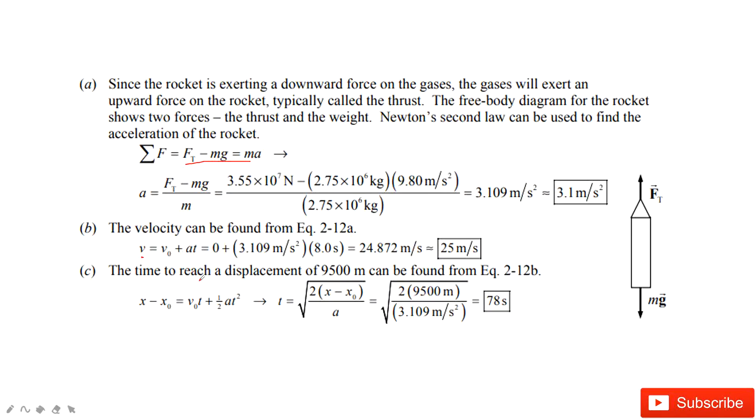The next one asks you to find the time t for a certain displacement. You can see this displacement is given. Initial velocity is zero. Acceleration is given. And then it is easy for us to get the time t.